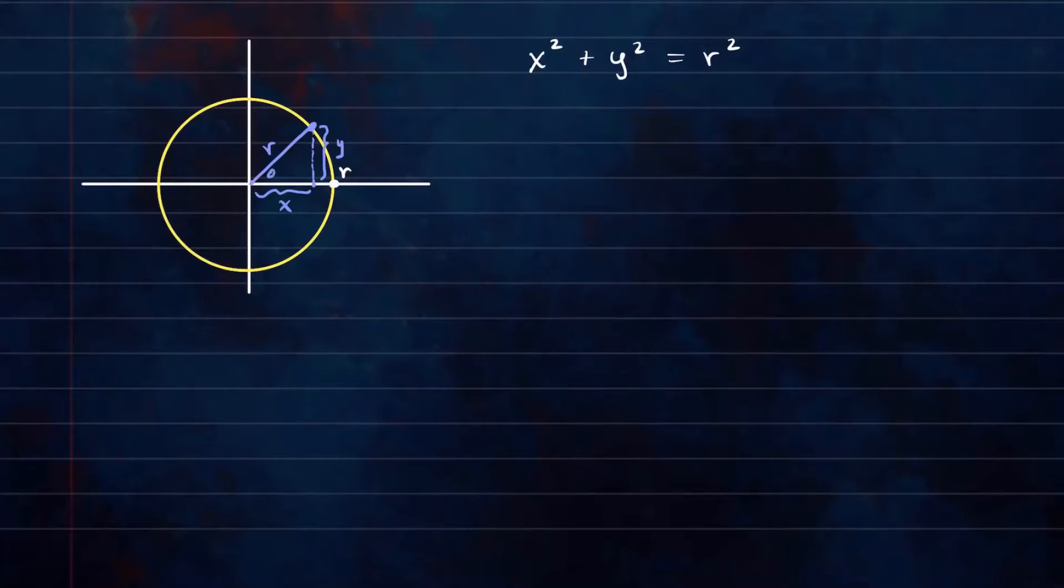Now we know from trigonometry that the Pythagorean theorem tells us that a squared plus b squared is equal to c squared. So that's how we got this formula right here. Another thing to know is that we also know our trig ratio defined in this, using this triangle.